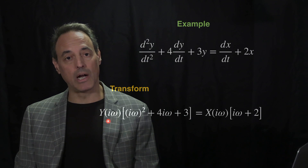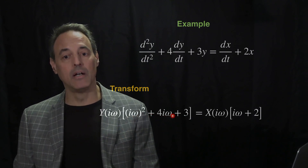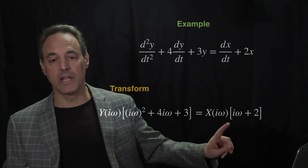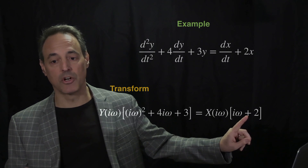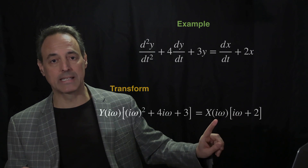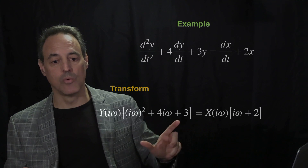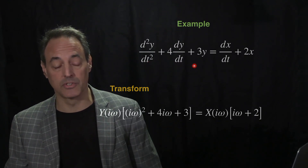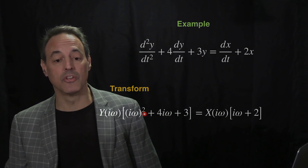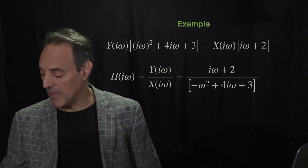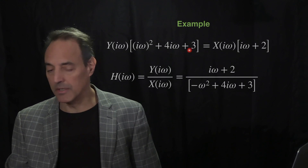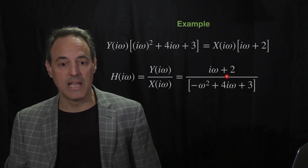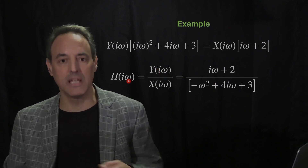Collecting terms: the Fourier transform of Y is multiplied by [(iω)² + 4iω + 3], which comes from the left-hand differential equation. On the right, Fourier transforming gives (iω + 2) times the Fourier transform of X — the iω from the first derivative plus two from the constant term. Dividing both sides by this polynomial and by X gives H(ω) = Y/X, which is the impulse response in the Fourier domain.